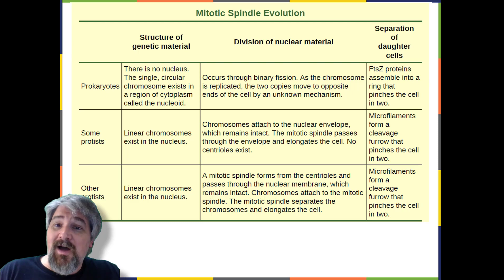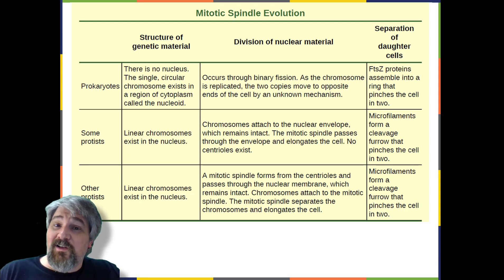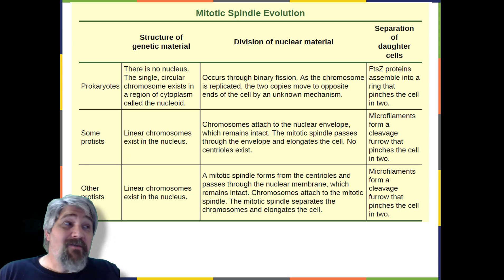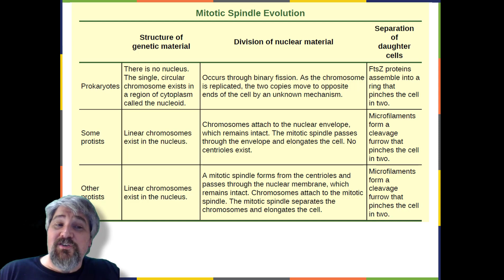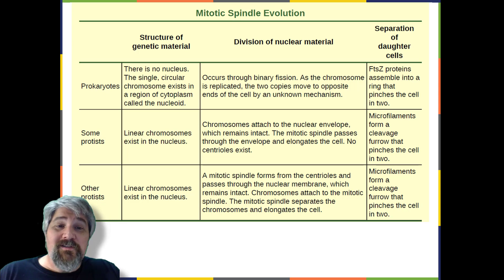Evolution in action: the mitotic spindle apparatus. The precise timing and formation of the mitotic spindle is critical to the success of eukaryotic cell division. Prokaryotic cells, on the other hand, do not undergo mitosis and therefore have no need for a mitotic spindle. However, the FTSZ protein that plays such a vital role in prokaryotic cytokinesis is structurally and functionally very similar to tubulin, the building blocks of the microtubules that make up the mitotic spindle fibers necessary for eukaryotes. The formation of a ring composed of repeating units of FTSZ directs the partition between the nucleoids in prokaryotes.